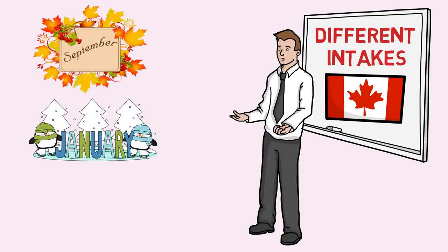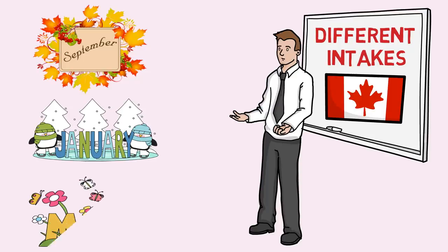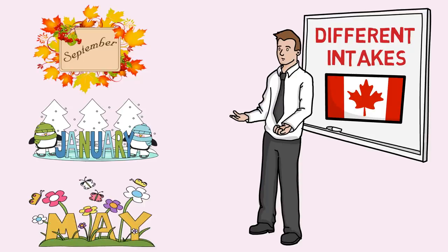The second intake starts a few months after September in January and it is called the January or the winter intake. This intake can be considered as a continuation of the fall intake. A fewer number of institutes offer courses in winter intake compared to the fall intake — mostly students who missed admission in the fall intake opt for winter. The last one is the spring or summer intake, also known as the May intake. This is the least preferred intake; not many colleges offer courses during this spring session.